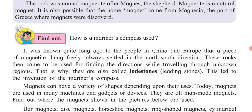It was known long ago to people in China and Europe that a piece of magnetite hung freely would always settle in the north-south direction. These rocks then came to be used for finding directions while traveling through unknown regions. That is why they are also called loadstones, which are now used in the mariner's compass.